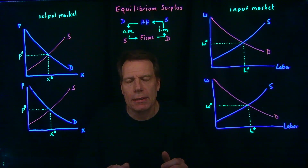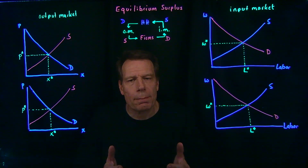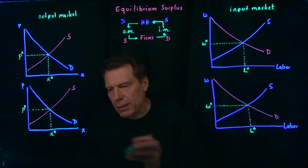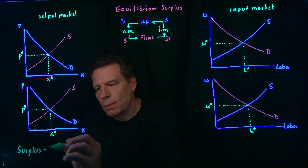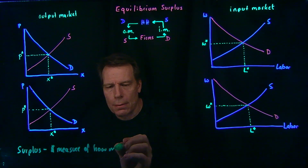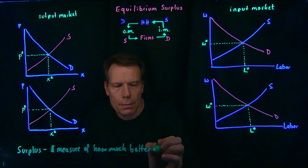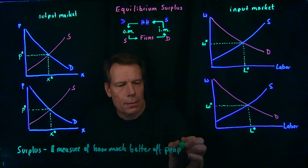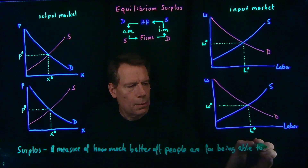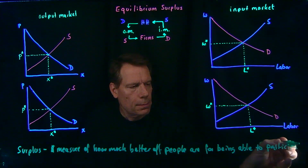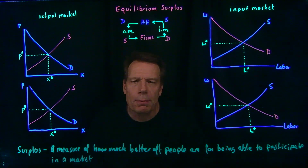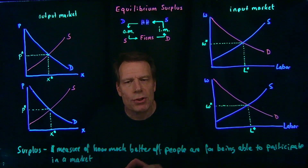Now that we know what a competitive market equilibrium is, we can ask the question: how much better off are people for being able to participate in such competitive markets? We'll call that the equilibrium surplus. By surplus, we mean a dollar measure of how much better off people are for being able to participate in a market, or how much they would be willing to pay to enter a market rather than be shut out from it.